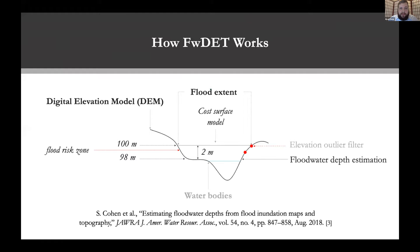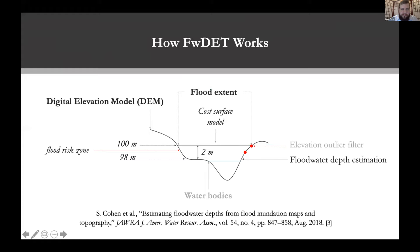A quick overview of how the floodwater depth estimation tool works: it relies on a digital elevation model as well as a flood extent layer. Having those two inputs, you can identify the elevations at the boundary of the flood margins, use those elevations to create a cost surface model across the terrain, and subtract that new surface from the existing elevation model to compute the difference and return an estimated depth.